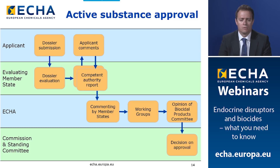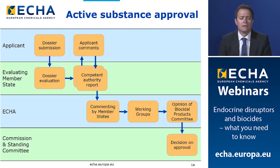Now that the endocrine disruptor criteria is applicable, a key change is that ECHA will no longer accept competent authority reports that do not contain an assessment of endocrine disruptor properties according to the new criteria. The main responsibility falls on the applicant and the evaluating member state to prepare and assess the properties according to the new criteria before submission to ECHA.